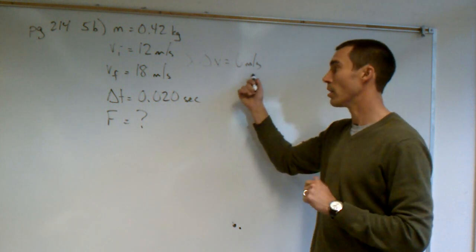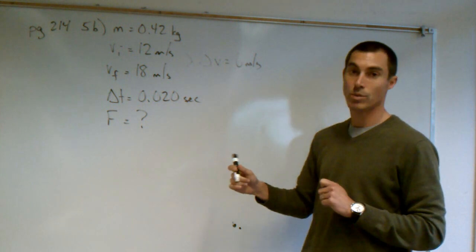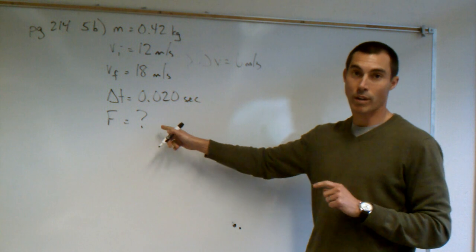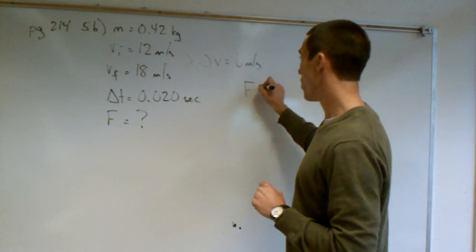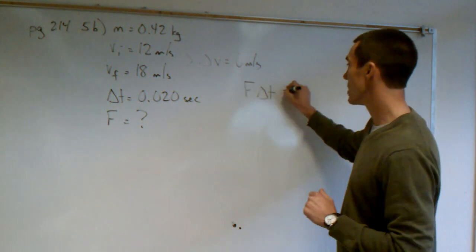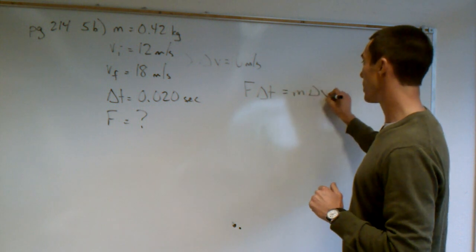Again, final minus initial. We have a time of 0.020 seconds. We're looking for a force. The impulse momentum theorem states that F delta T equals M times delta V.